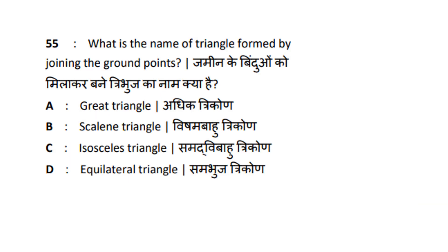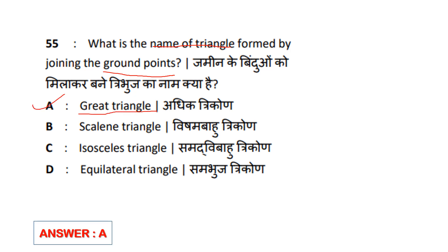What is the name of a triangle formed by joining the ground points? Ground points join and form a triangle. The name of the triangle is Great Triangle, Scalene Triangle, Isosceles Triangle, and Equilateral Triangle. So the answer is option A.